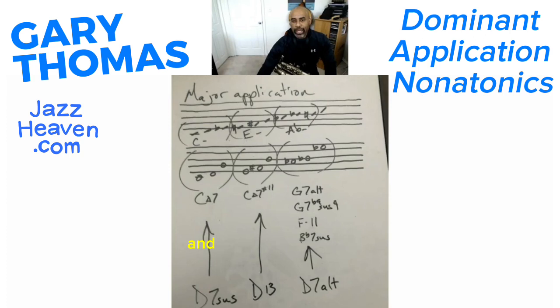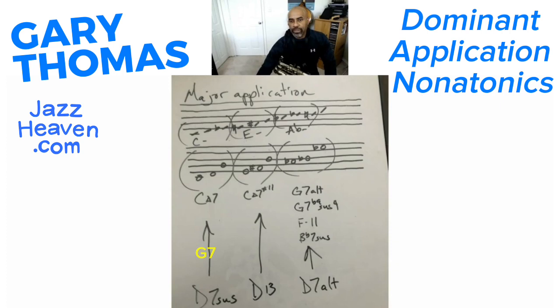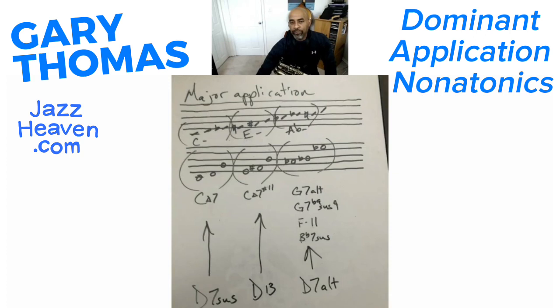This last one can be a number of things. From the top down, if you look at the first two chords — the G7 alt and the G7 flat nine sus four — those are related to C major. Below that, the F minor 11 and the B flat seven sus are also related to C major. And the D7 alt is basically part of that planning process I was thinking about.